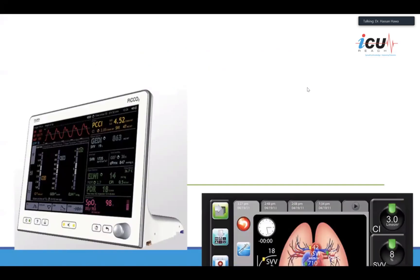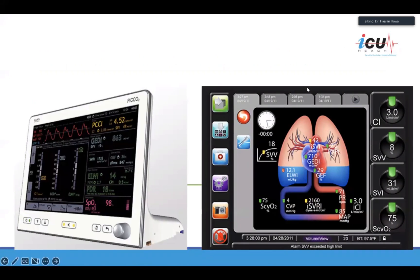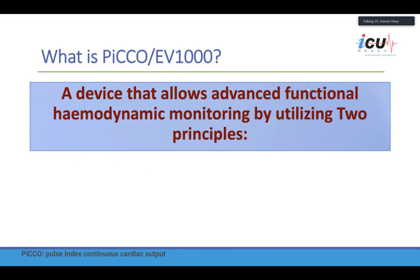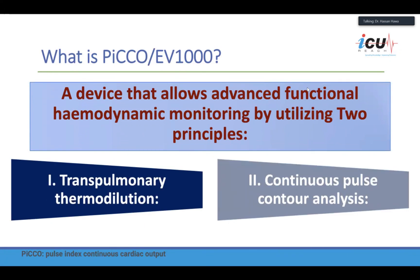Moving on to transpulmonary thermodilution devices: we have either PICO on the left or Volume View, also called EV1000. These devices allow advanced functional hemodynamic monitoring utilizing two principles — transpulmonary thermodilution and continuous pulse contour analysis. The beauty is that the pulse contour analysis is calibrated to the transpulmonary thermodilution, making these devices a gold standard to assess hemodynamics for the circulation.